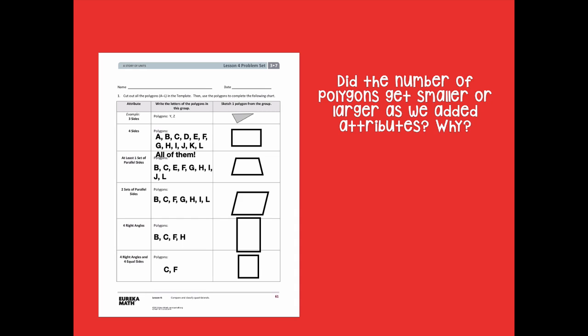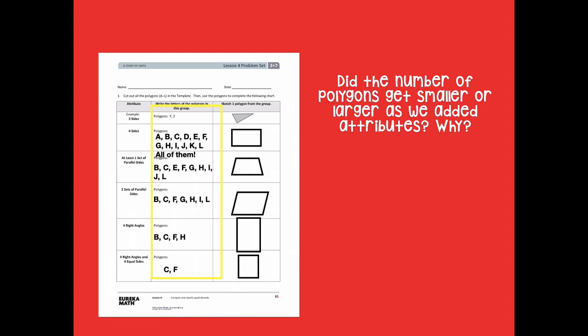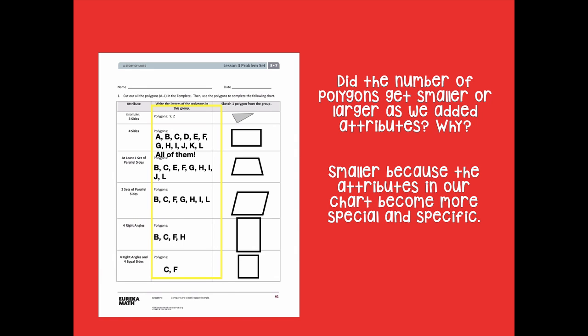Did the number of polygons get smaller or larger as we added attributes? They got smaller because the attributes in our chart became more special and more specific. The first row just asked for four sides — that was all of them. But by the very bottom, we're asking for something very specific: four right angles and four equal sides, not just four sides. That changes things quite a bit.